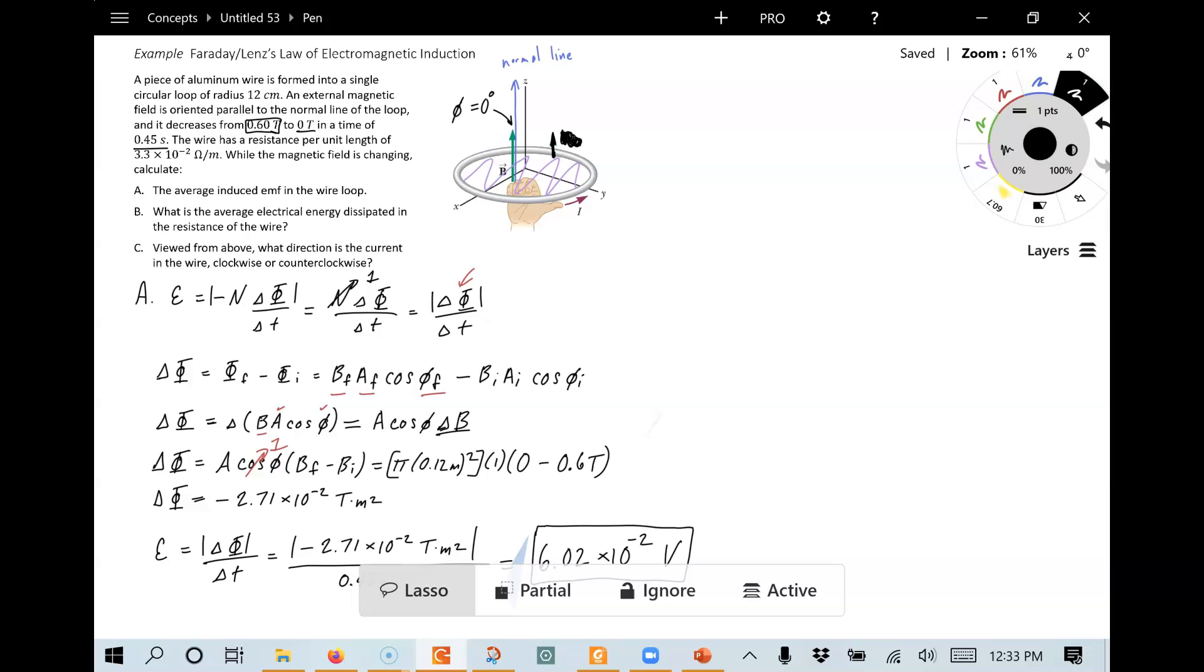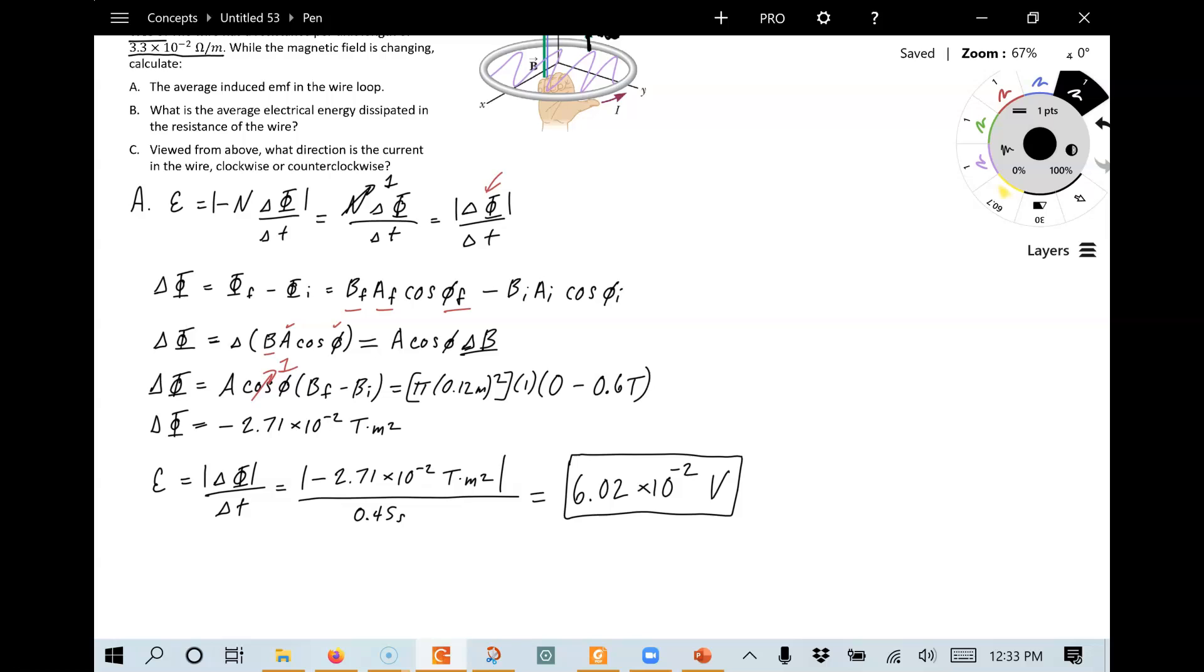What do we need to know to do part B? Well, we're going to need to know what the resistance of the wire is. And we're given this number here, which tells us how much resistance you have per unit length of wire. So we can use that to calculate the resistance. So let's go ahead and write that down here.